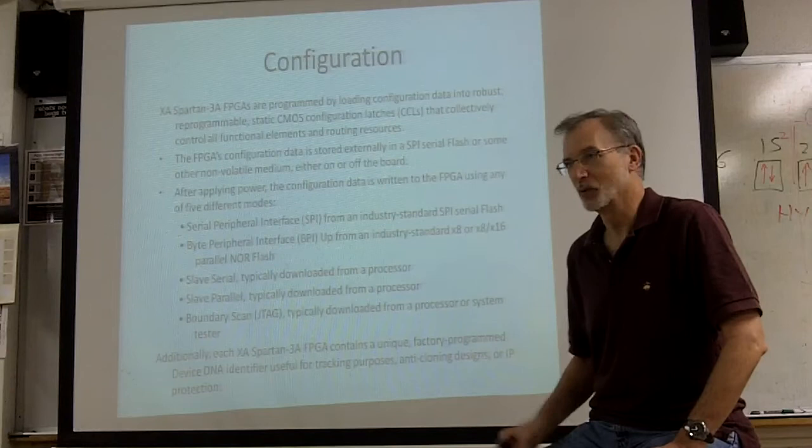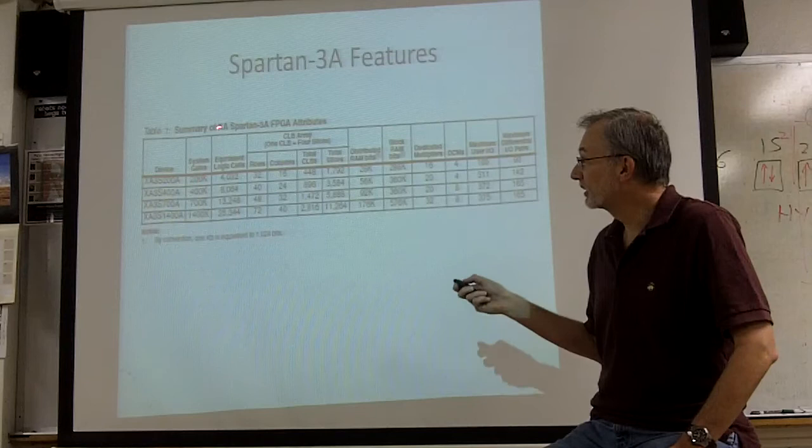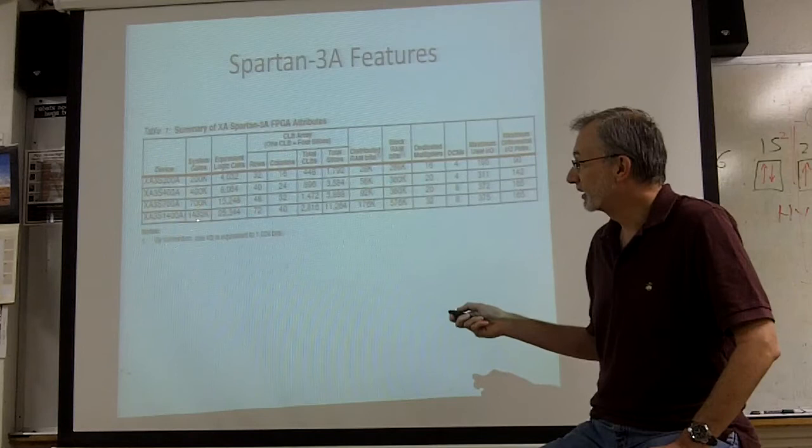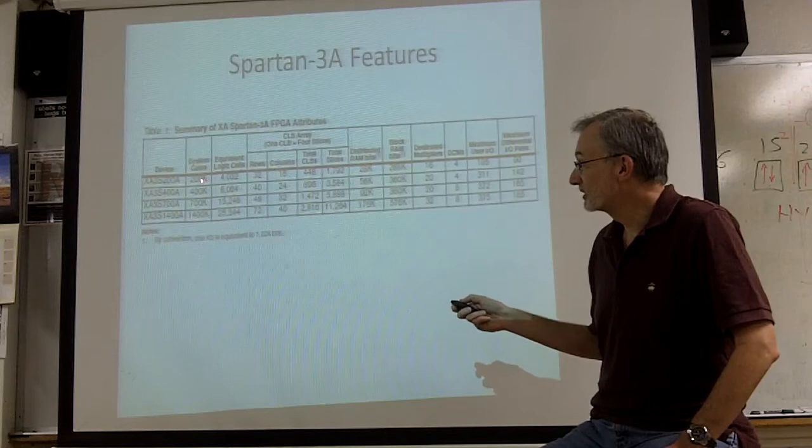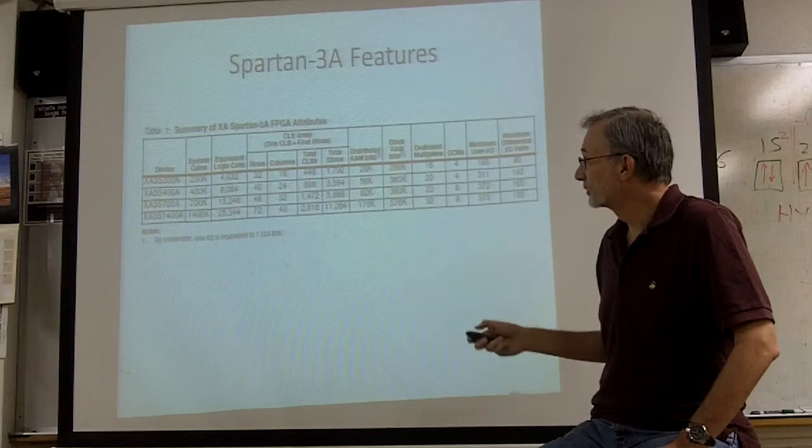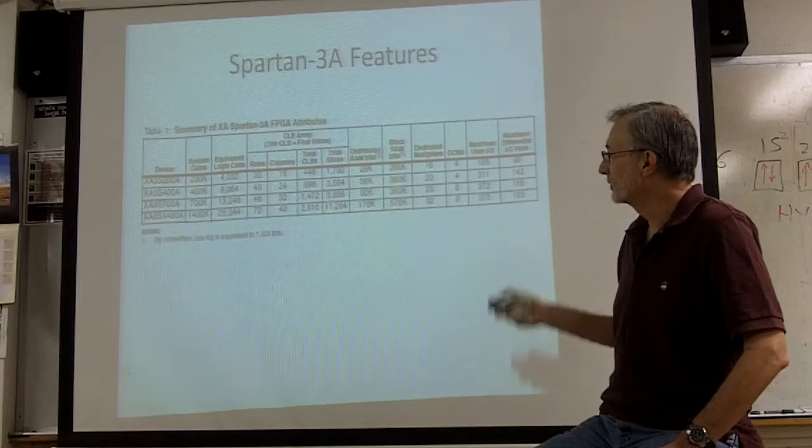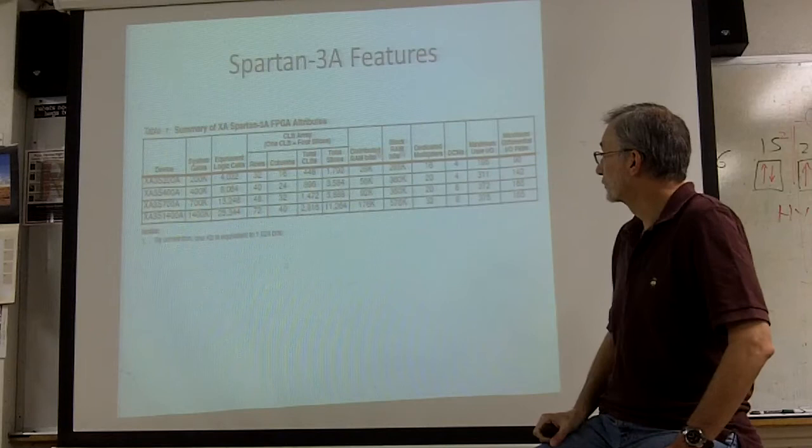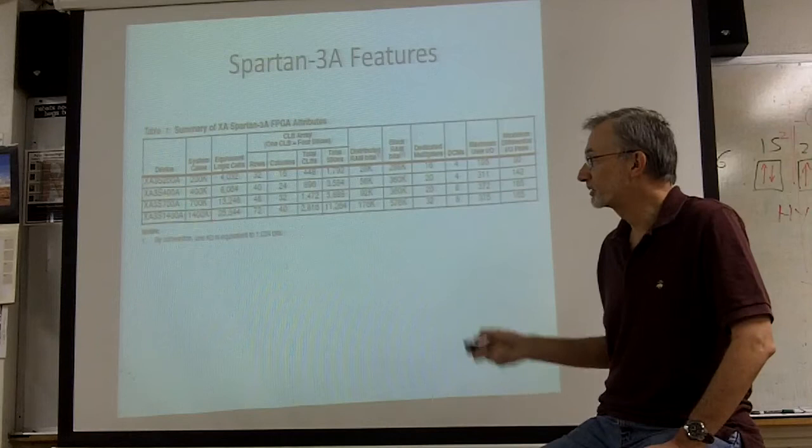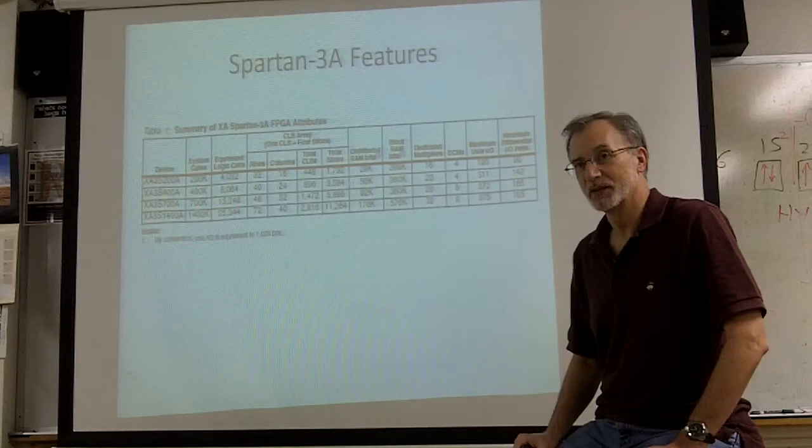This is a summary of four different versions of the Spartan 3A part. You can see that the complexity increases as the part gets bigger, going from 200,000 system gates up to 1.4 million system gates. Number of rows and columns increases for the configurable logic blocks. The amount of distributed RAM goes up, the number of multipliers goes up, and the clock managers goes up. As well, the input-output blocks go up, so you've got far more pins on the most complex part to get signals in and out of the part than you do on the simplest part.